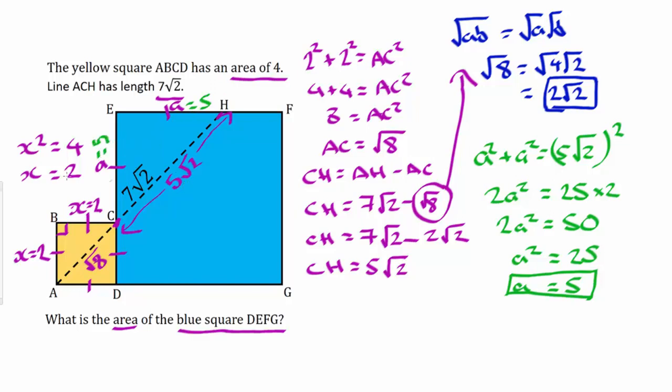We actually have everything we need now. We know that this little length here is 2, and we've got the rest of the length of the blue square is 5. So we've got the length of the blue square basically, which is 2 add 5, which is 7. And if we square that we will get the area of the square which is 49.